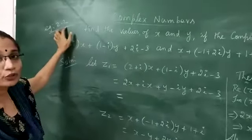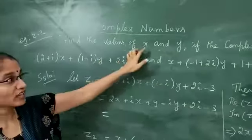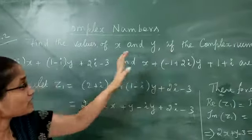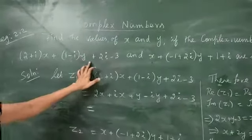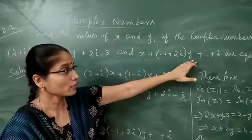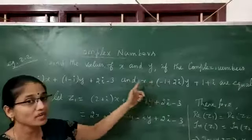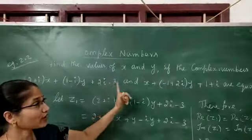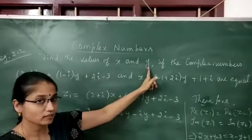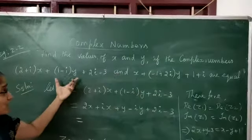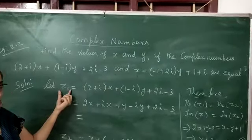Now example 2.2: find the values of x and y if these two complex numbers are equal. That is the question. So let us take the first number as z1.